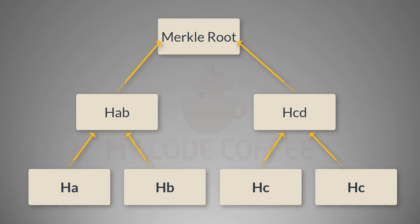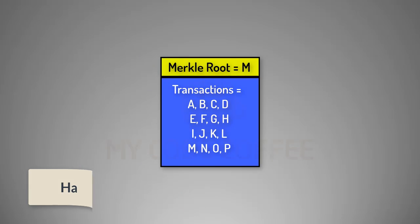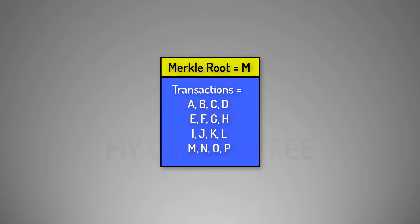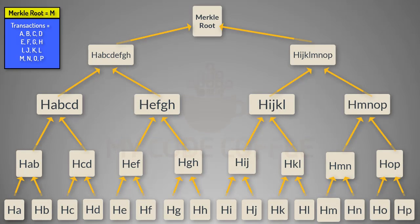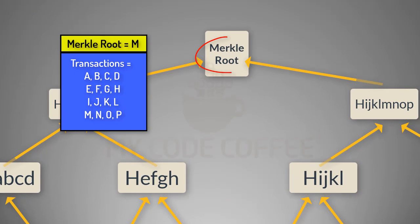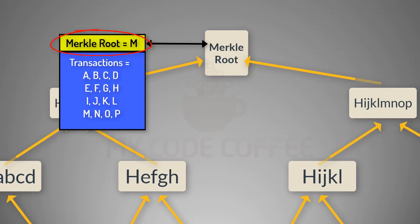In this way, the Merkle root summarizes all the transactions, and if you change any transaction it will change the value of the Merkle root. This example is based on four transactions, but you can generalize it for N transactions — ultimately you will get a 32-byte Merkle root. Now let us say we have a block whose header has this Merkle root. A block will normally have hundreds of transactions, but for simplicity let us assume this block has 16 transactions from A to P. If you want to prove that these 16 transactions belong to this block, you can prove it by calculating the Merkle root.